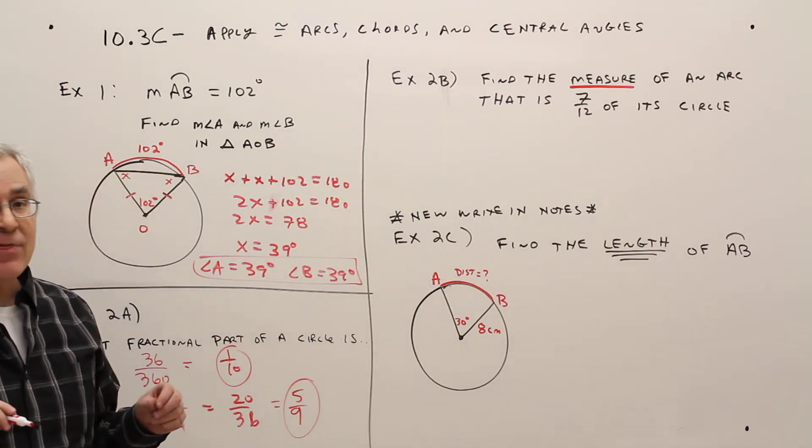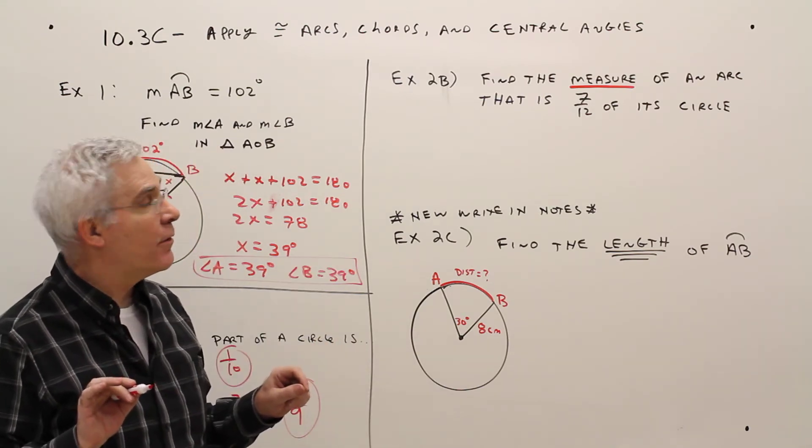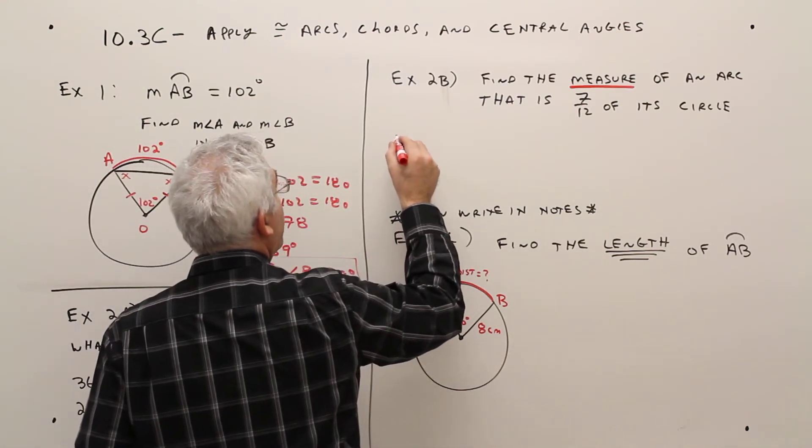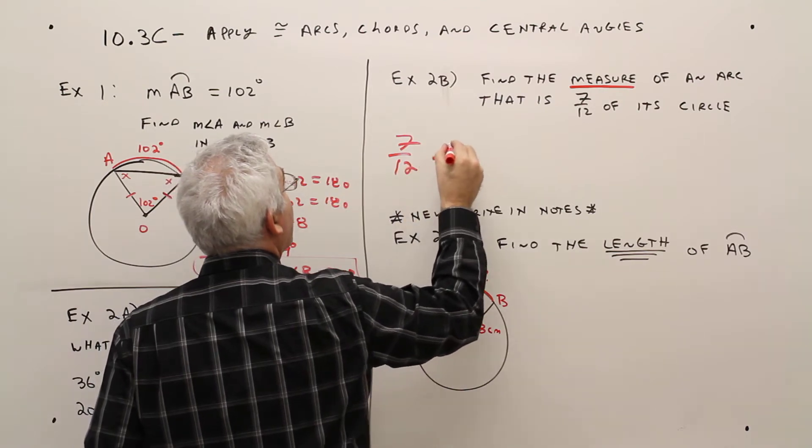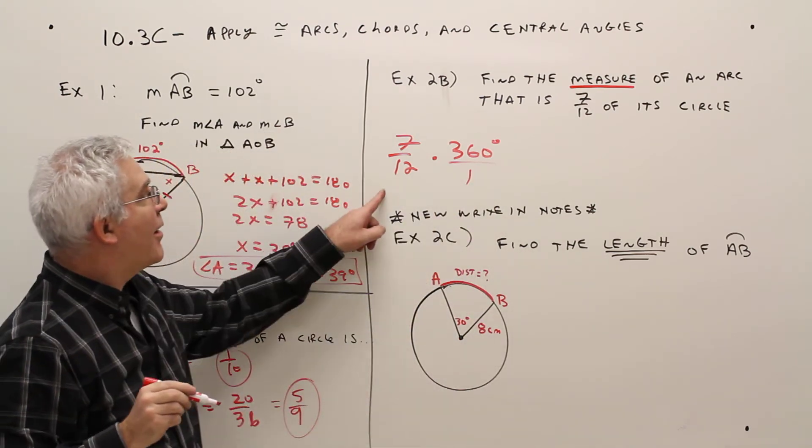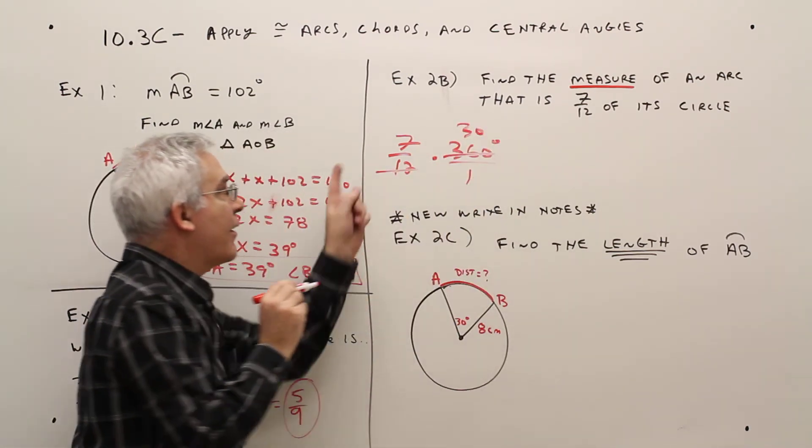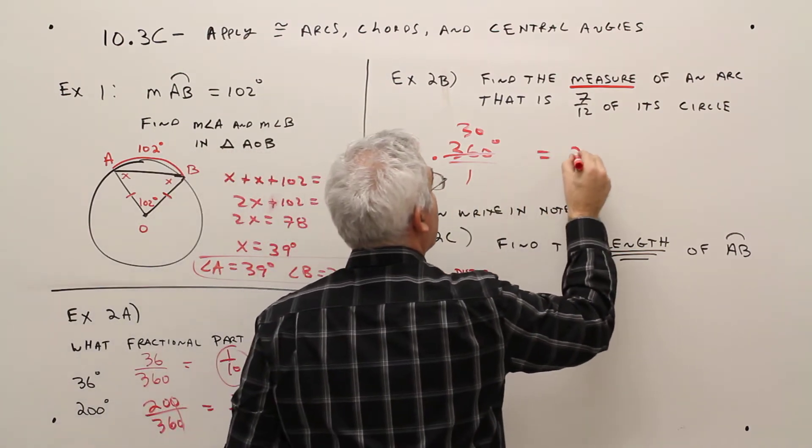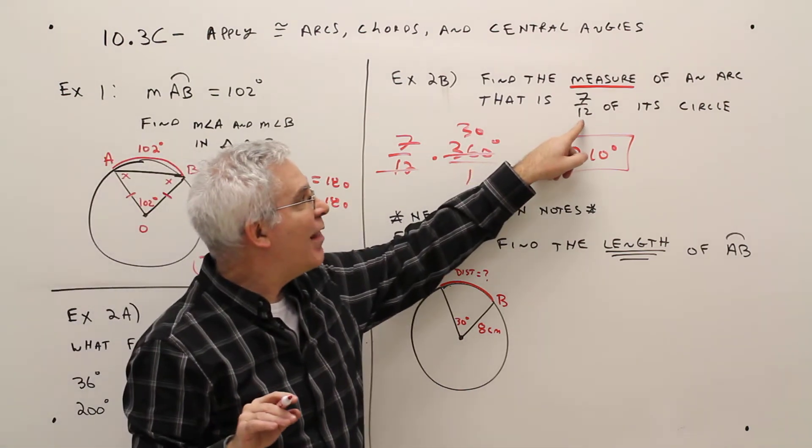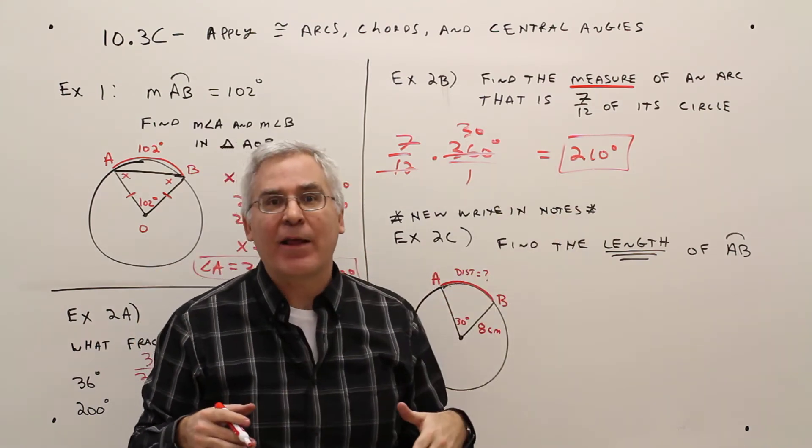Example 2B. Find the measure of an arc, so that's going to be in degrees, that is 7 twelfths of its circle. All right, once again, the whole circle is 360 degrees. So it would be 7 twelfths times 360 degrees. I could put that over 1. I know 12 goes into 36 three times, add the 0. So that'll be 30. And then 7 times 30 is 210. I always like to make sure if my answers make sense. This is slightly over half of a circle, so this should be slightly over 180 degrees. That kind of makes sense.